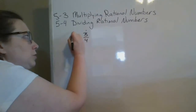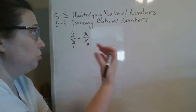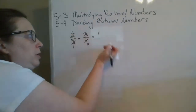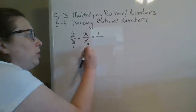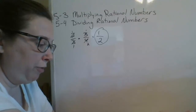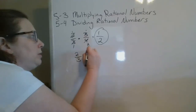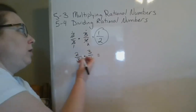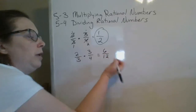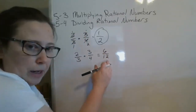Our 2 goes into 2 once, and 2 goes into 4 two times. So we have two brand new fractions that we are multiplying. Multiply across the top: 1 times 1 is 1. Multiply across the bottom: 1 times 2 is 2. So our final answer is 1 half. If you had not cross-reduced, what will happen is you multiply across the top, multiply across the bottom, and then you'll have to reduce.